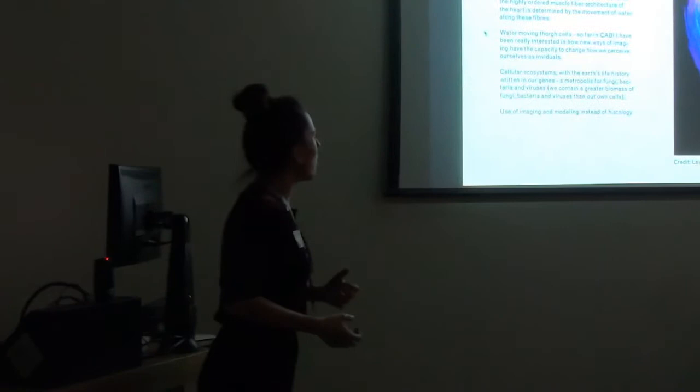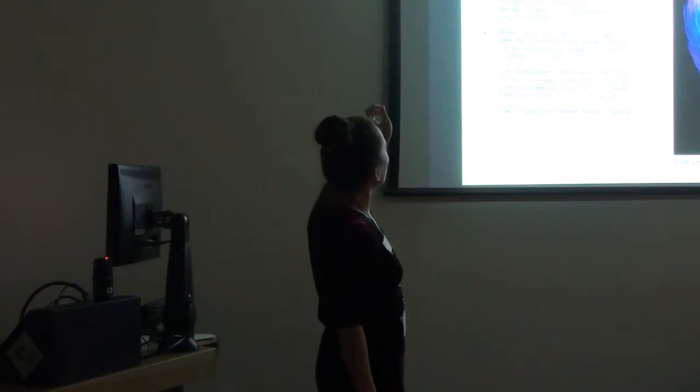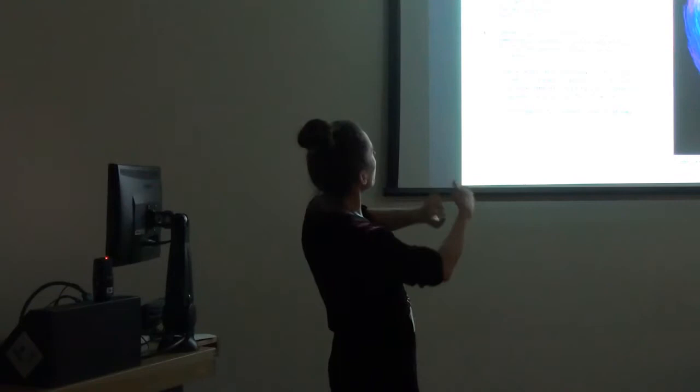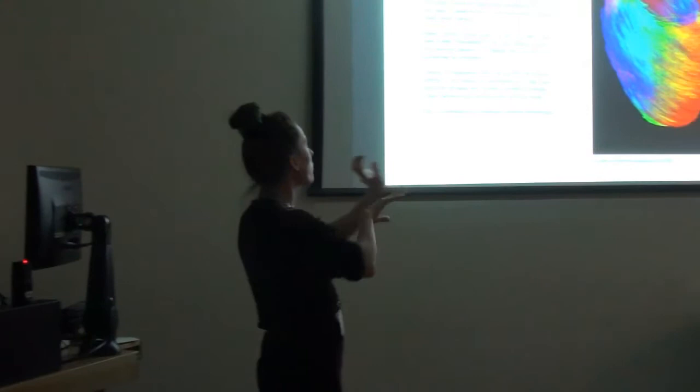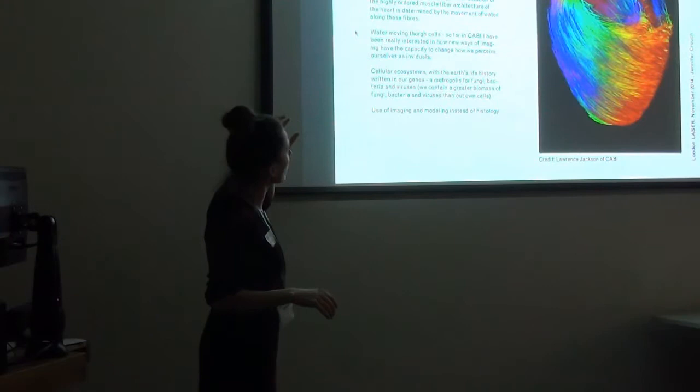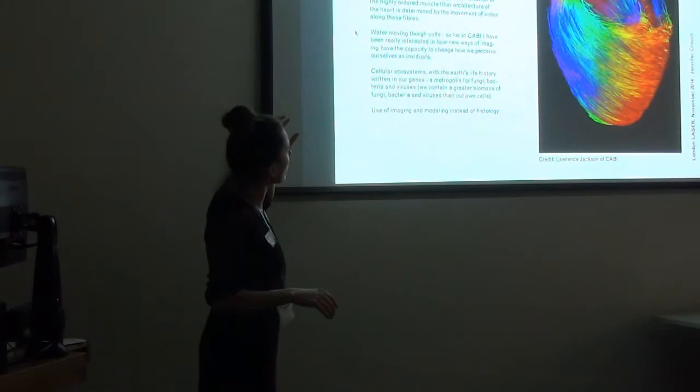This image was created using diffusion tensor magnetic resonance imaging. The orientation of the highly ordered muscle fibre architecture of the heart is determined by the movement of water through the fibres. I've been really interested in how new ways of imaging have the capacity to change how we perceive ourselves as individuals.